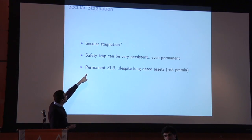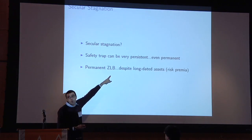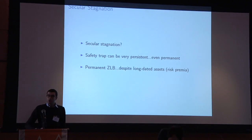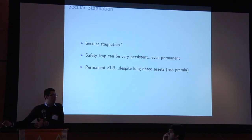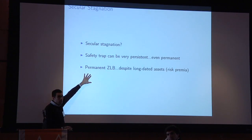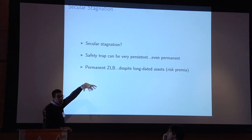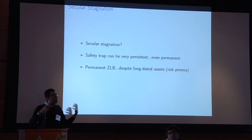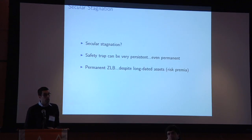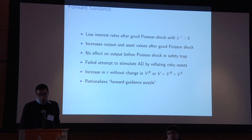An important observation is that you can have a permanent zero lower bound even with long-lived assets. In the U.S. economy, for example, land is a long-lived asset. Zero interest rates forever might seem to imply the price of land would be infinite — but that's not the case here. Land is risky, so the only rate of return equal to zero is the safe interest rate. Long-lived risky assets don't have to have infinite value.